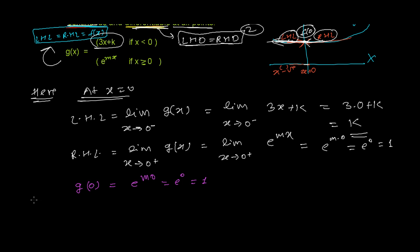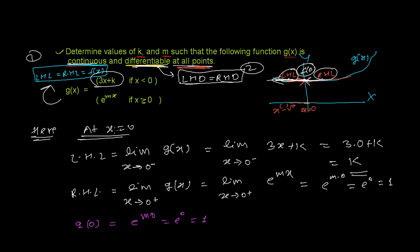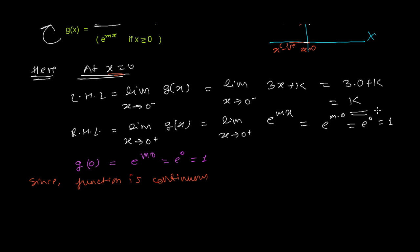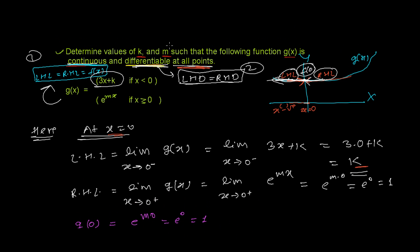Since the function is continuous at x equals zero, left-hand limit must equal the functional value must equal the right-hand limit. Our left-hand limit is k, right-hand limit is 1, and functional value is 1. So we get k equals 1. We've found the value of k.